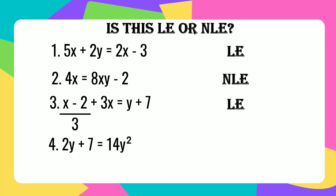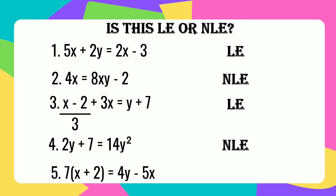Number 4: 2y plus 7 equals 14y squared. This is not a linear equation in two variables. Number 5: 7 times the quantity x plus 2 equals 4y minus 5x. This equation is a linear equation in two variables.